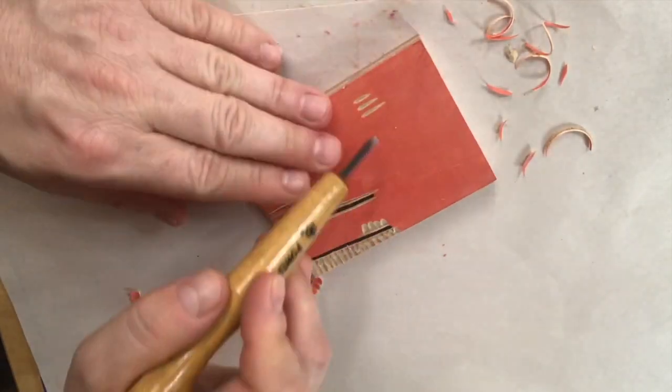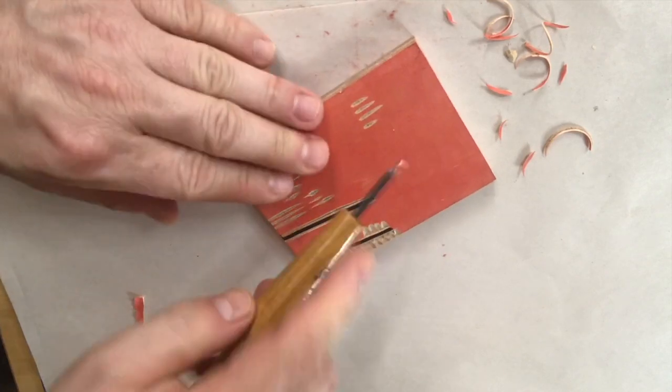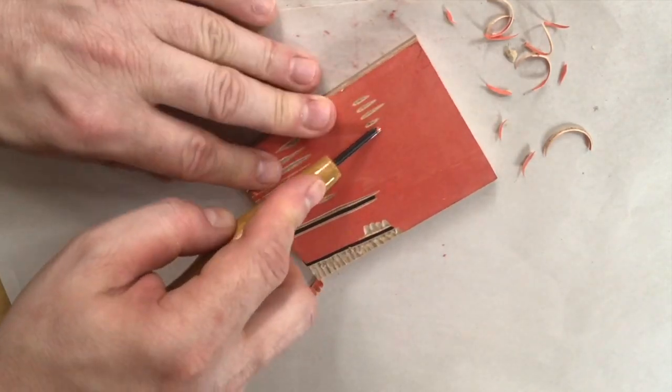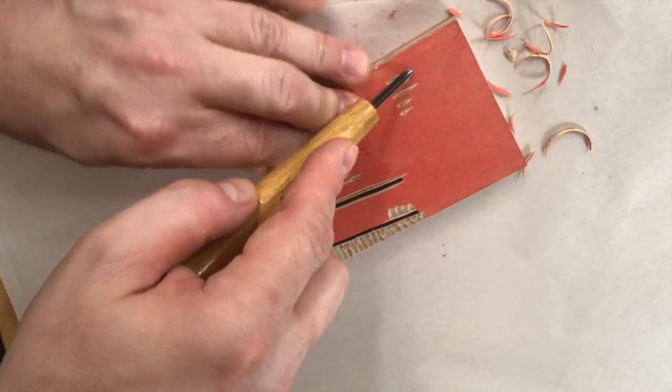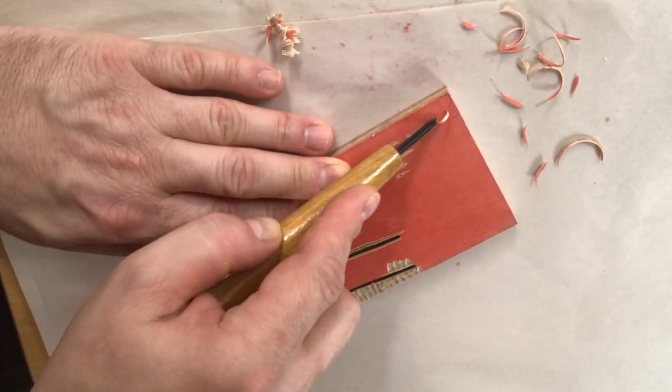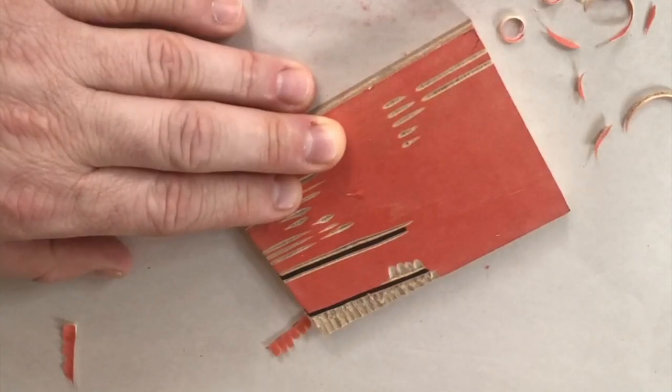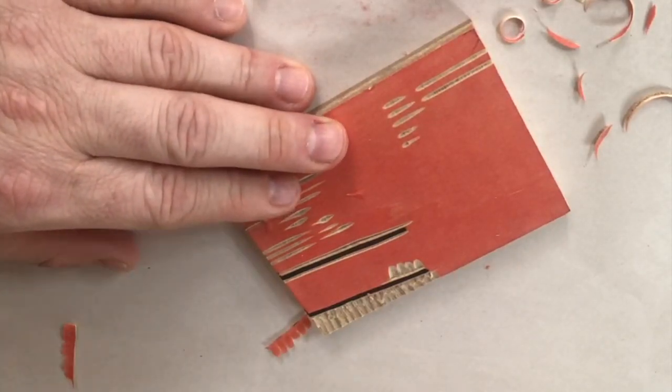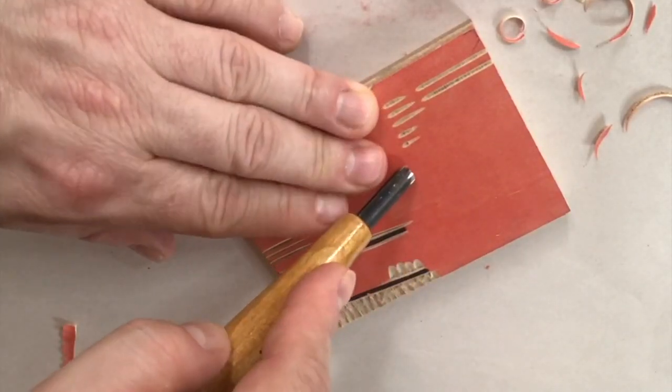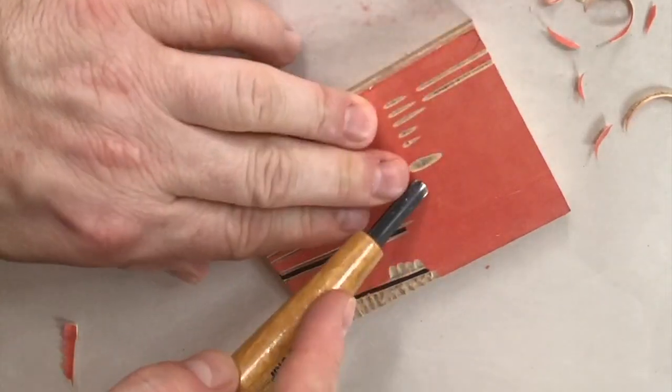Here you can see the quality of mark that the U-Gouge makes. It's a thicker line and it does have the rounded entry and exit points at the beginning and ends of the lines. The bigger the gouge, the bigger the mark.